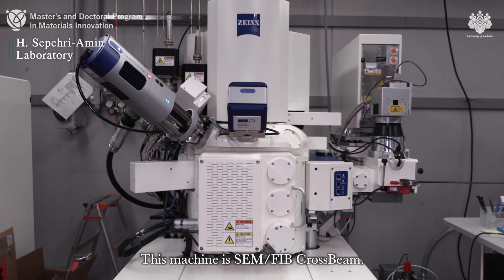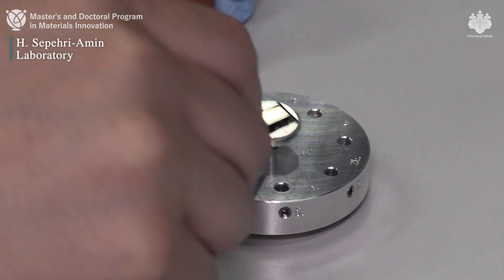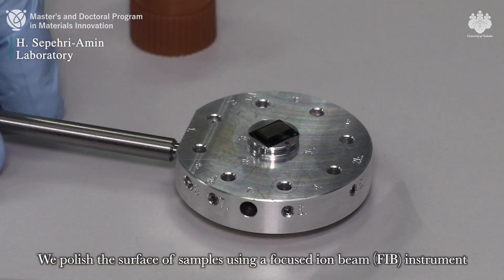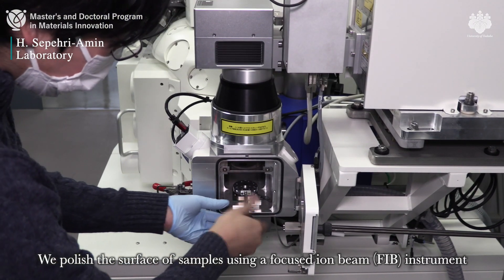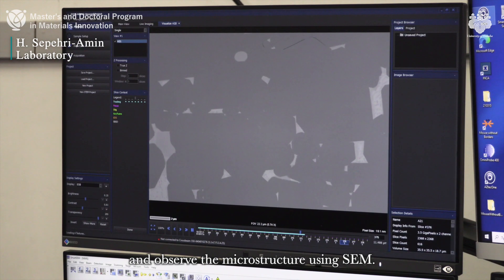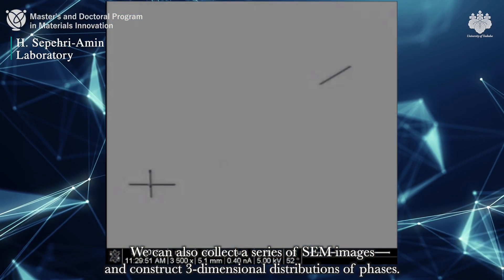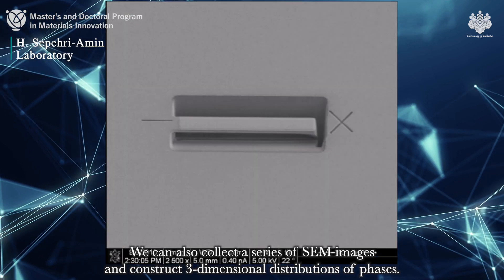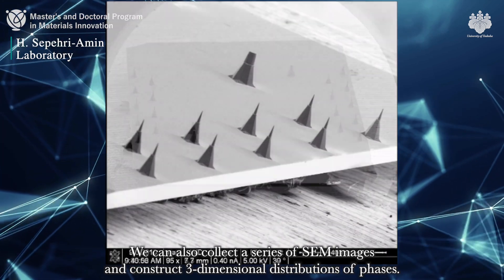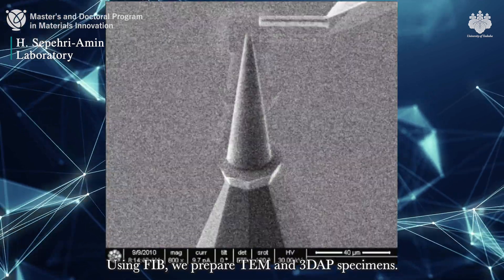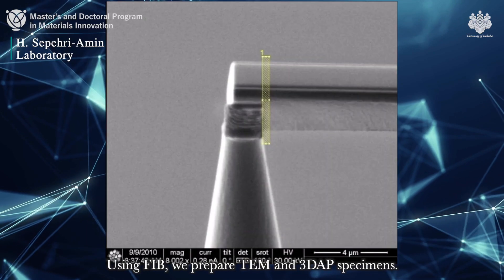Here you can see our facility for SEM observation. This machine is a SEM-FIB crossbeam. We polish the surface of samples using a focused ion beam instrument and observe the microstructure using SEM. We can also collect a series of SEM images and construct three-dimensional distributions of phases. Using FIB, we prepare TEM and 3DAP specimens.